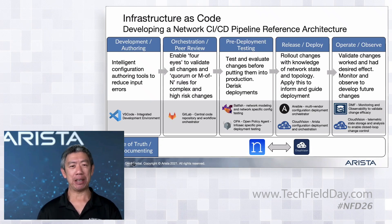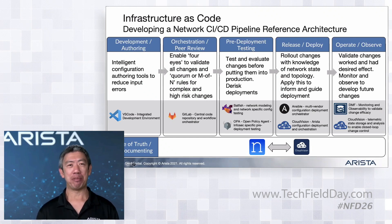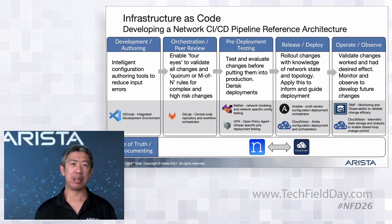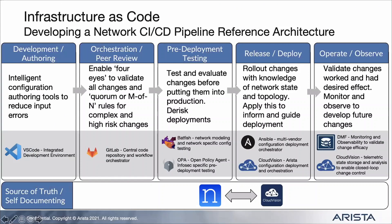We then move into pre-deployment testing. Batfish may be new to some folks but it's a really interesting and powerful tool for validating network changes before rollout. Batfish takes all your config files, models out what your network behaviors are going to be, and allows you to run queries against it — without spinning up VMs or containers. It models the behavior and lets you ask: do these ACLs do what I expect? Do my routing tables look correct after this change? This is a key component of how the whole pipeline comes together.